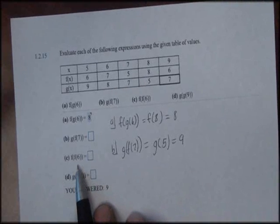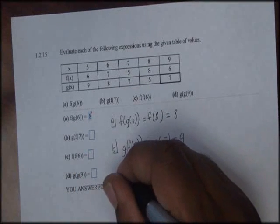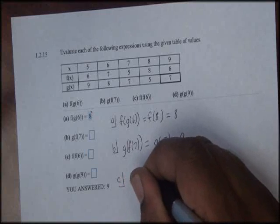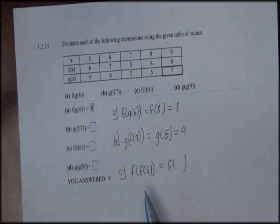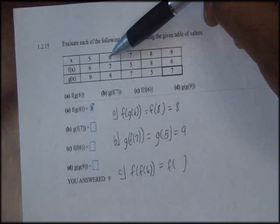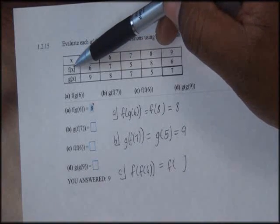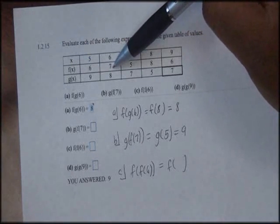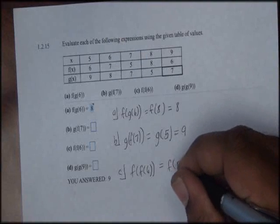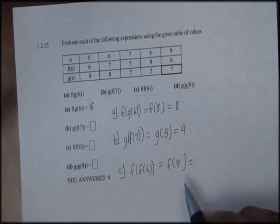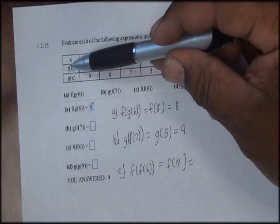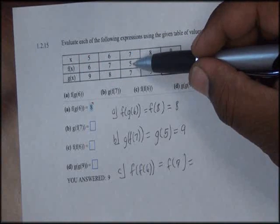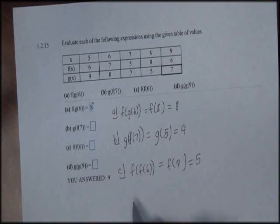Next we'll find f of f of 6. First we'll find f of 6 — we take the domain value 6, input it into the f of x function, and it outputs a 7. So now we'll find f of 7: we take the domain value 7, input it into the f of x function, and it returns a 5. Therefore f of f of 6 is equal to 5.